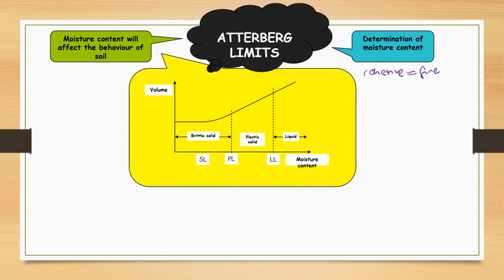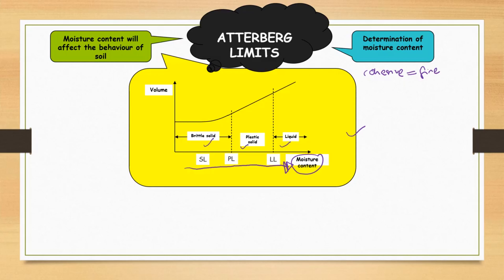Looking at this figure, moisture content increases to the right, meaning more water equals higher moisture content. The stage of soil changes from brittle solid to plastic and finally transforms to a liquid stage with increasing moisture content. Based on the data, the soil may be classified into certain stages: brittle solid, plastic solid, and liquid stage.